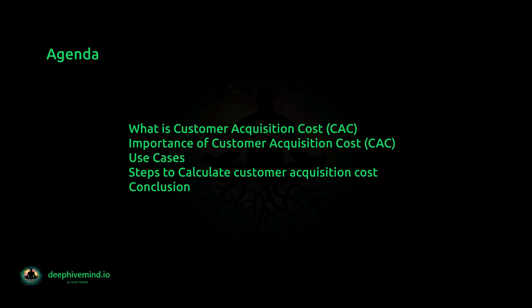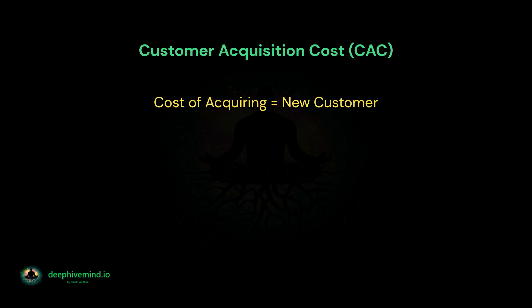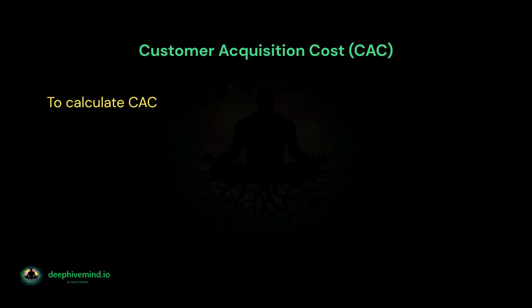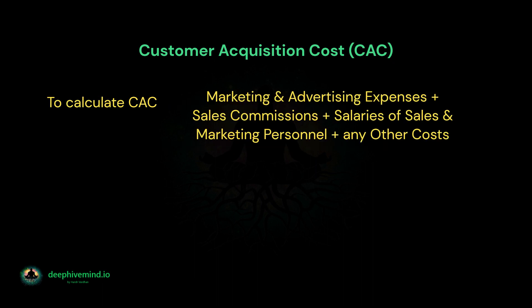What is customer acquisition cost (CAC)? CAC is a metric that calculates the cost of acquiring a new customer. It is a way for businesses to measure how much they are spending on marketing and sales efforts to attract and convert new customers. To calculate CAC, a business needs to add up all the costs associated with acquiring a new customer, including marketing and advertising expenses, sales commissions, salaries of sales and marketing personnel, and any other costs associated with the acquisition process. This total cost is then divided by the number of new customers acquired during the same time period.